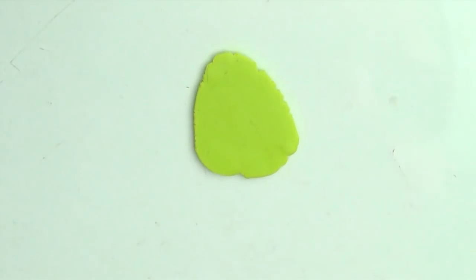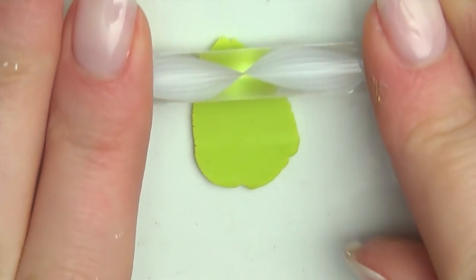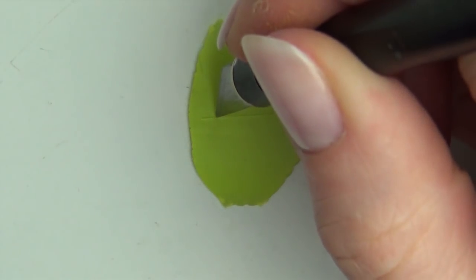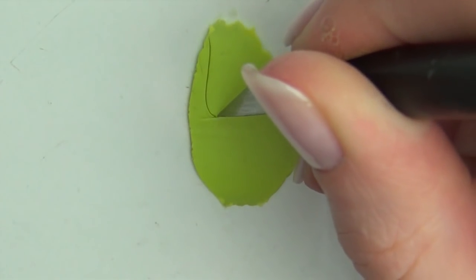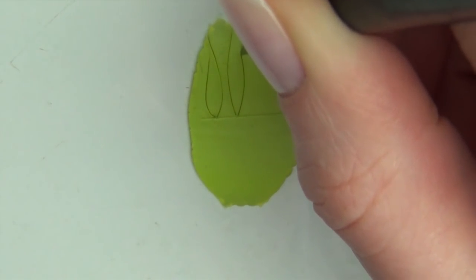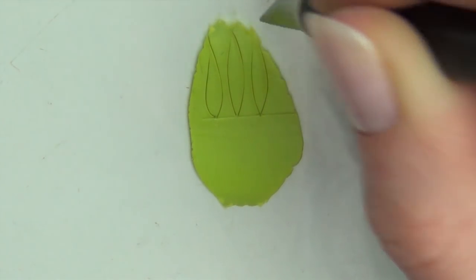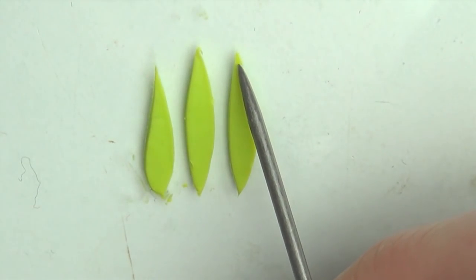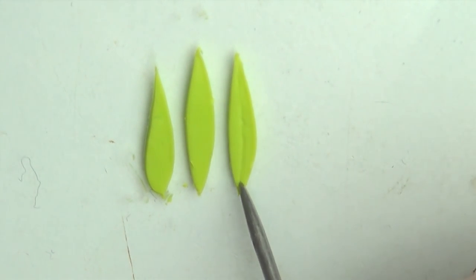While the fish are drying, we're going to make some plants for the bowl. Roll out some green clay as thin as you can, and cut out some wiggly leaf shapes. Then take a needle tool and make a line down the middle. Also make small veins out of the sides.